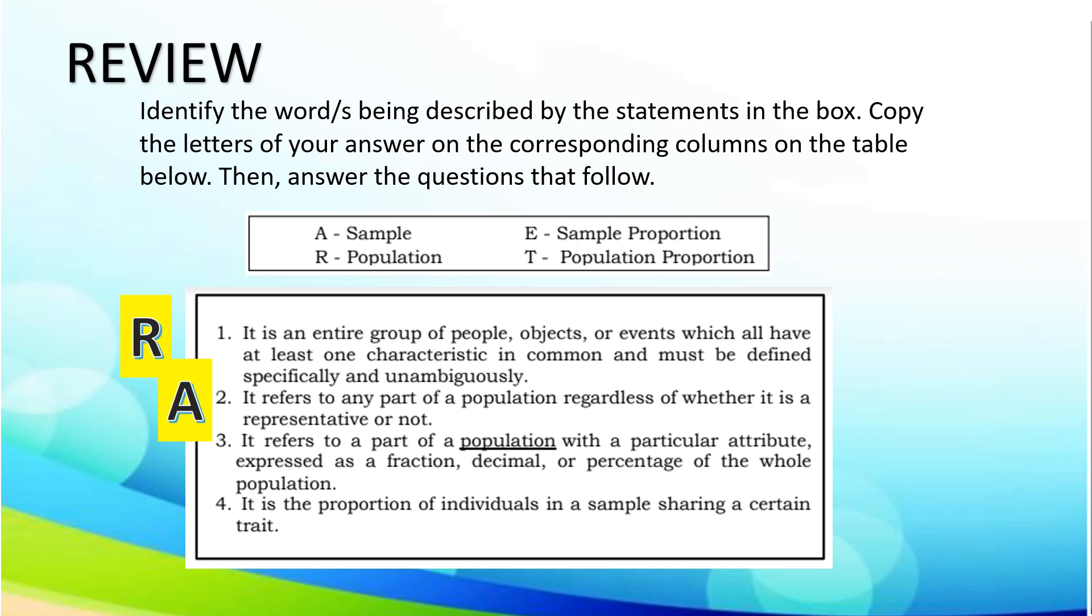For number 3: It refers to a part of a population with a particular attribute expressed as a fraction, decimal, or percentage of the whole population. Answer: T, Population proportion.